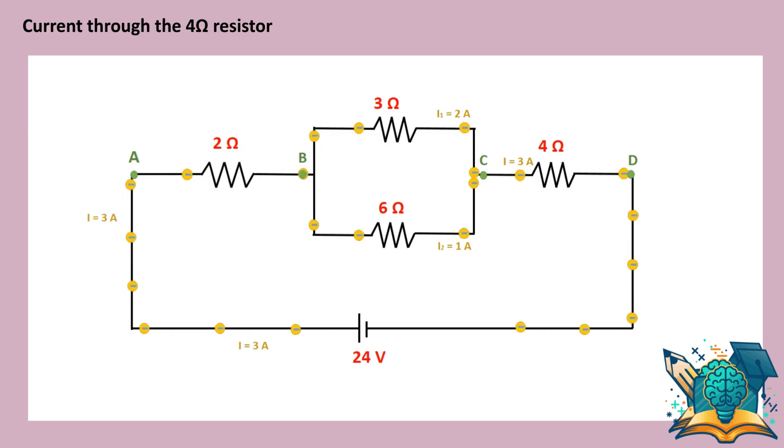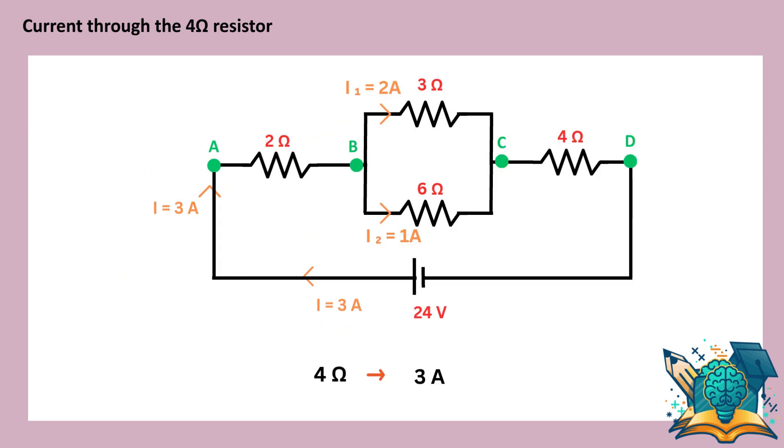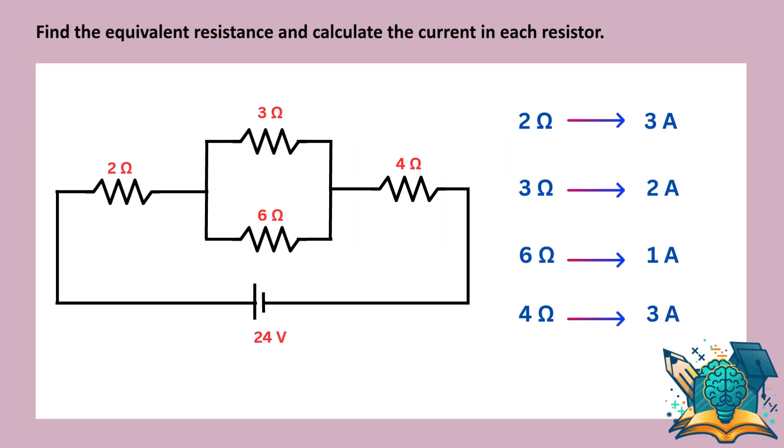So, the same 3 ampere current flows through the 4 ohm resistor. Let's now summarize the current through each resistor.